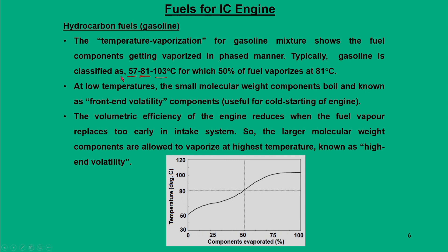The terminology defines front-end volatility, which occurs at low temperatures — 57°C in this case — and high-end volatility, defined at 103°C, when larger molecular components are allowed to vaporize. Front-end volatility is the most important requirement for cold starting of the engine, while high-end volatility is required because failing to maintain it can reduce the volumetric efficiency of the engine. This is the basic philosophy of choosing gasoline fuel for IC engines.